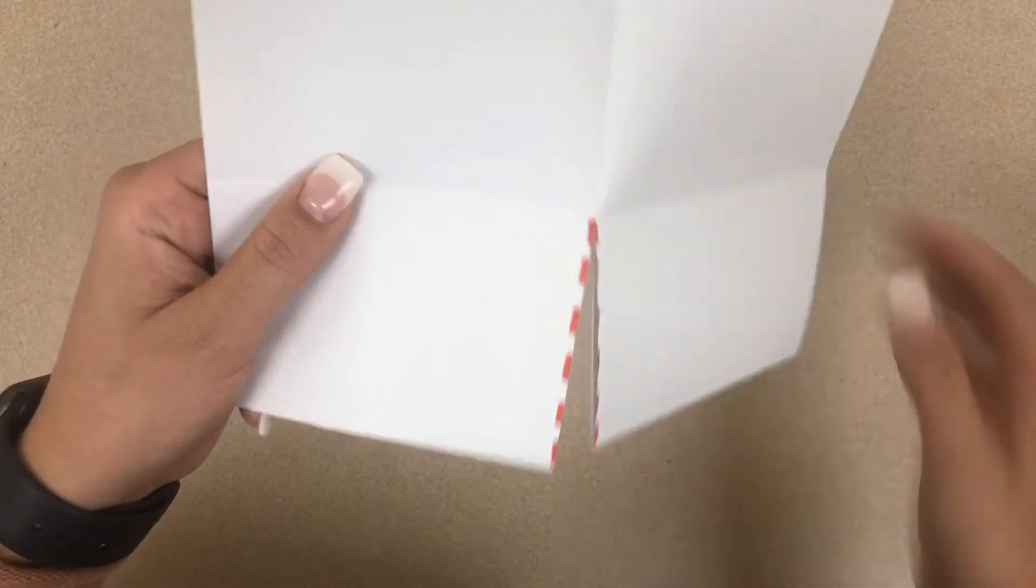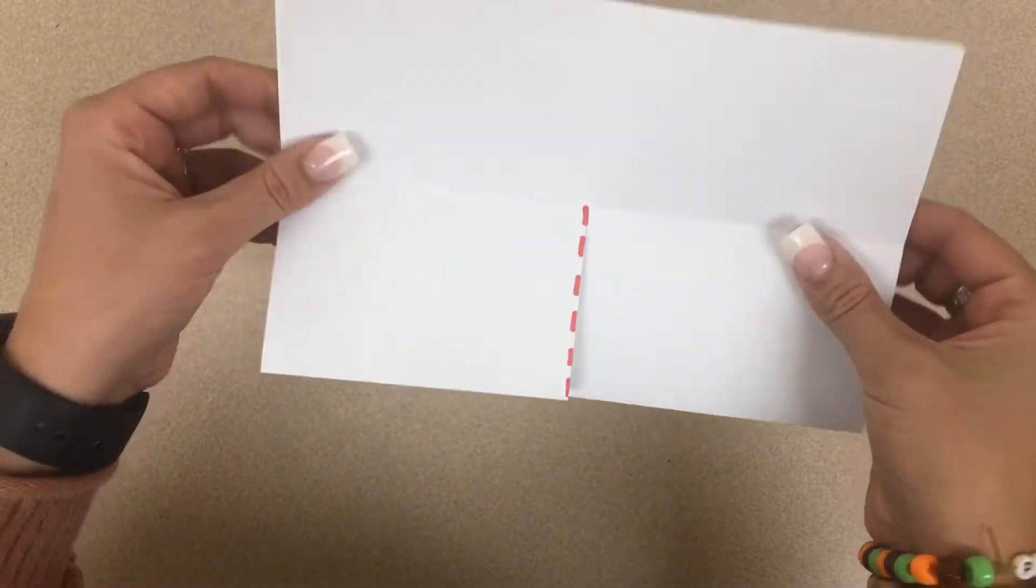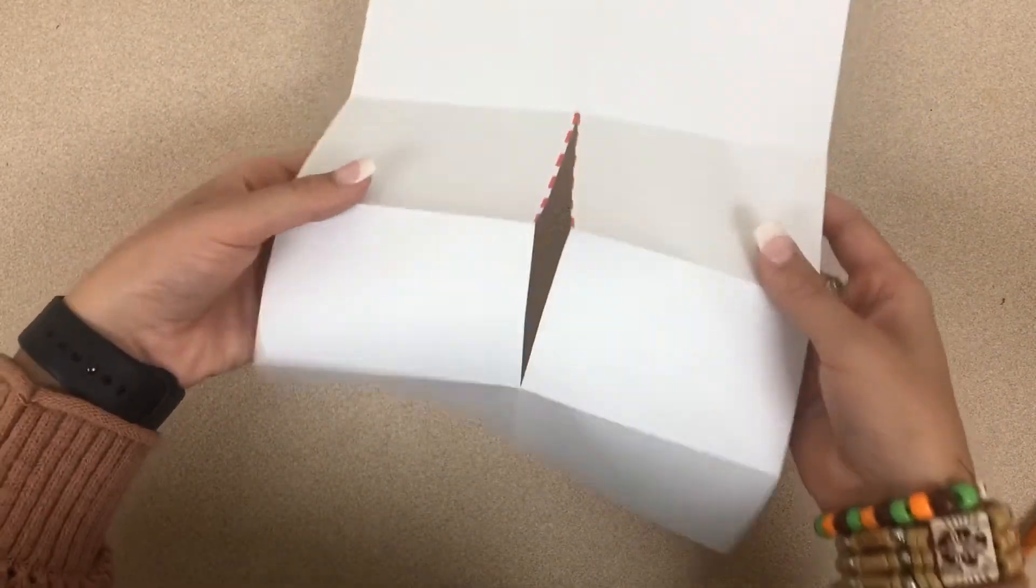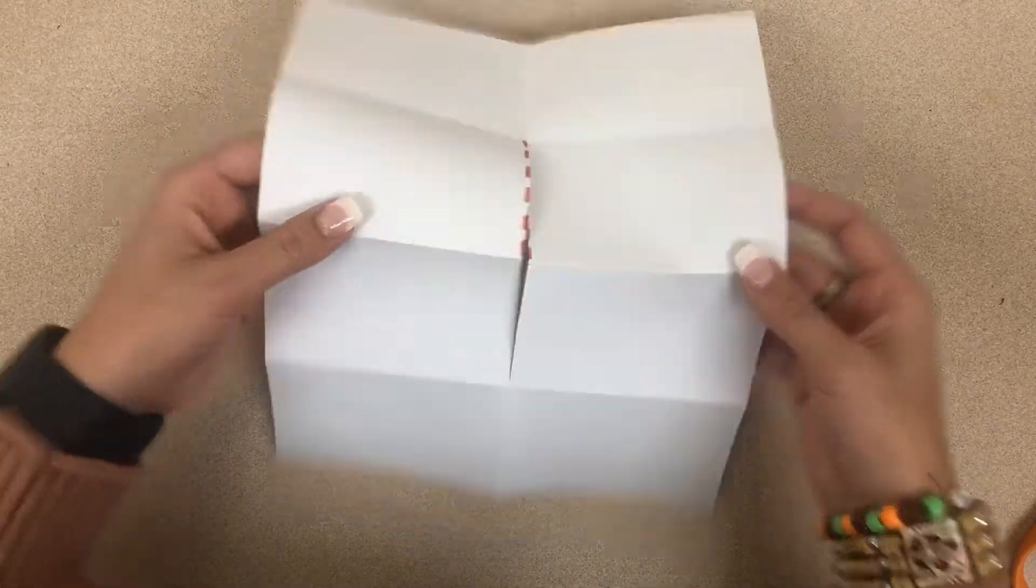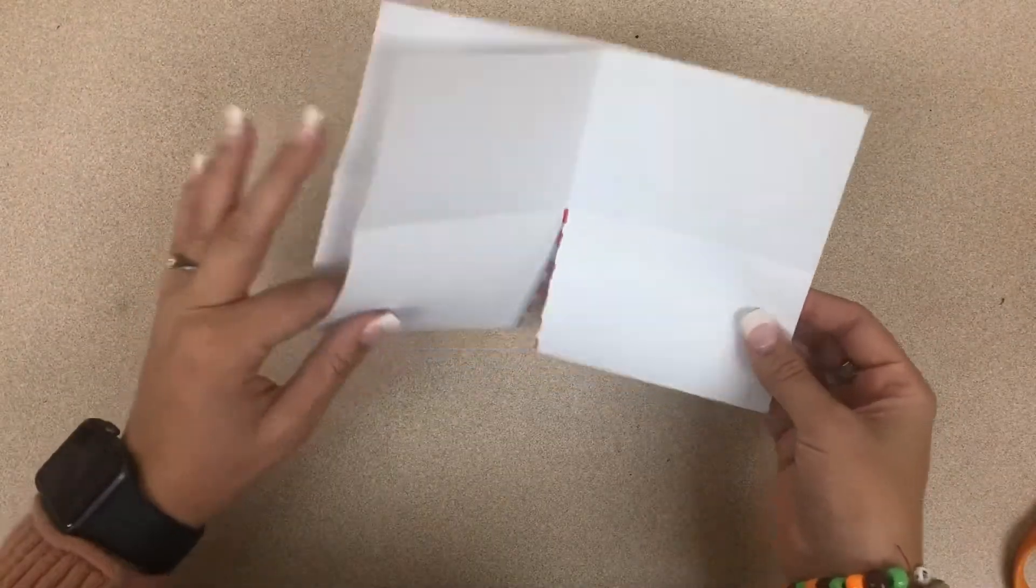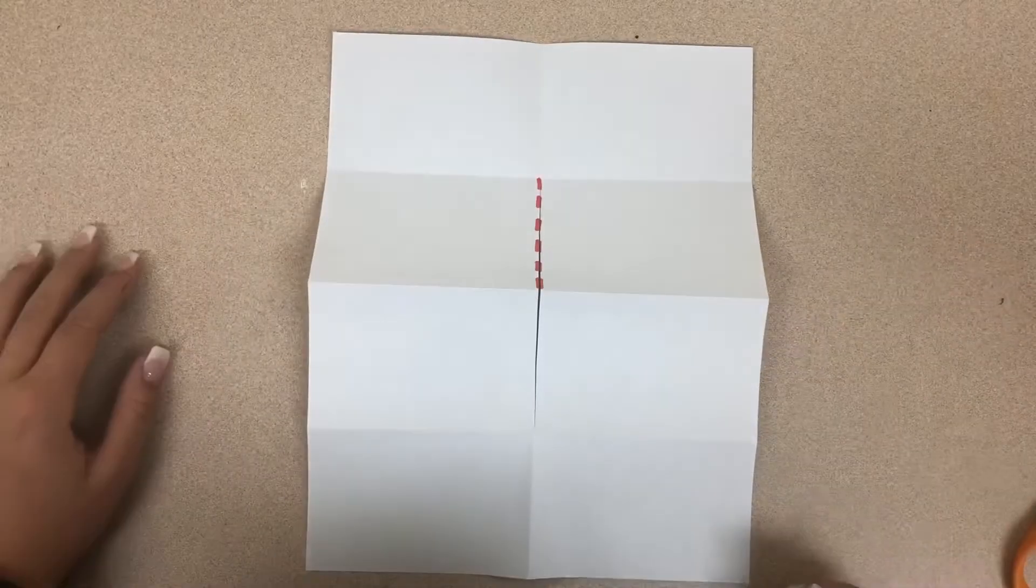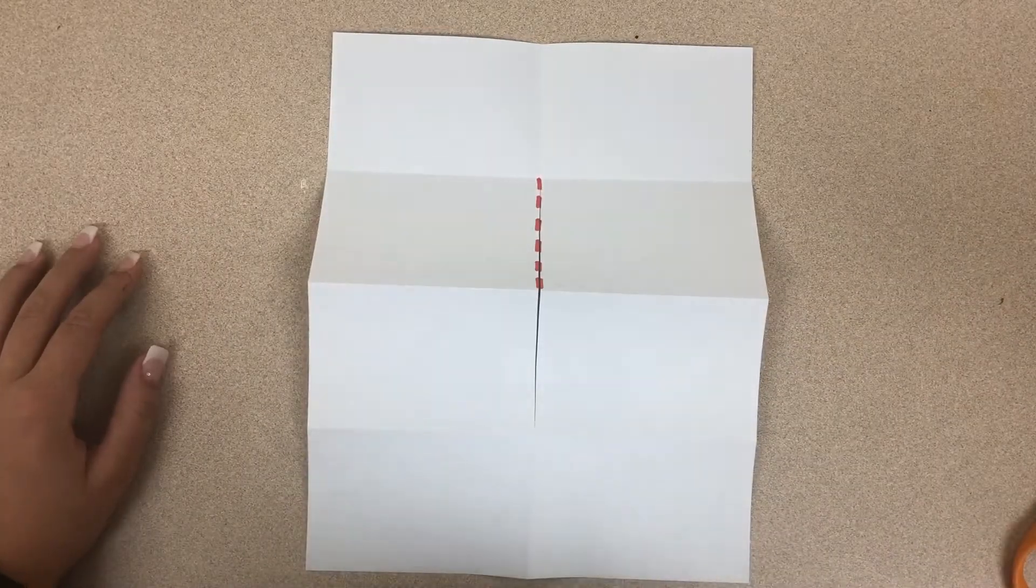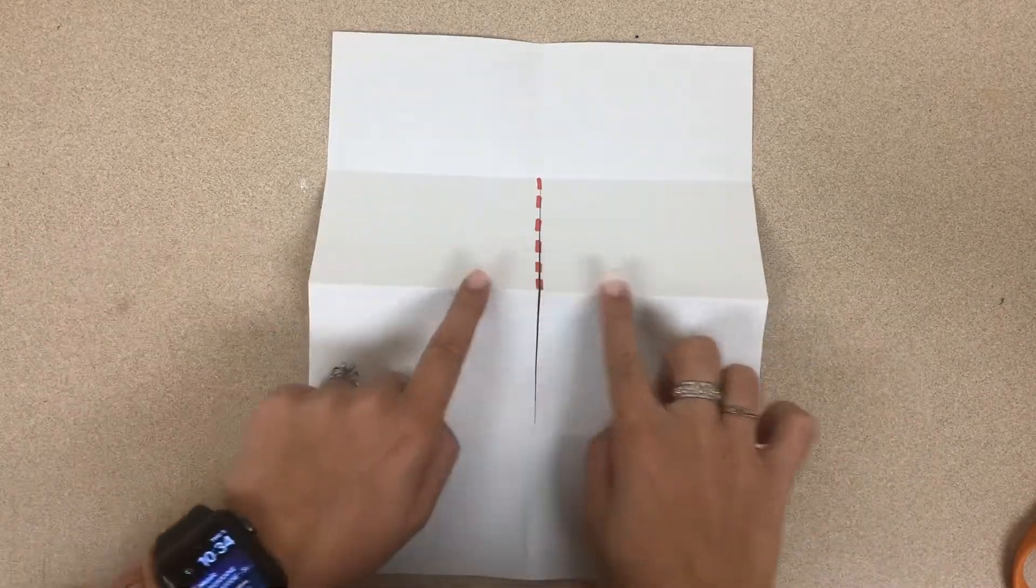Alright, that's it. I have cut just to my middle crease and now you've got this opening in the middle of your book. So open up your paper and lay it flat on your table so that this middle crease is up and it's like a mountain.